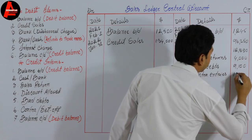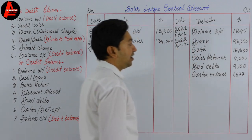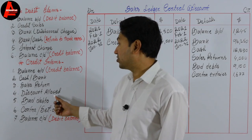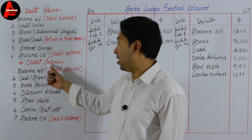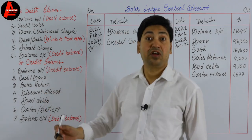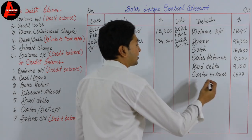Discount allowed of $4,643. Discount allowed is a credit item in this account, so we record it on the credit side. We write discount allowed: $4,643.